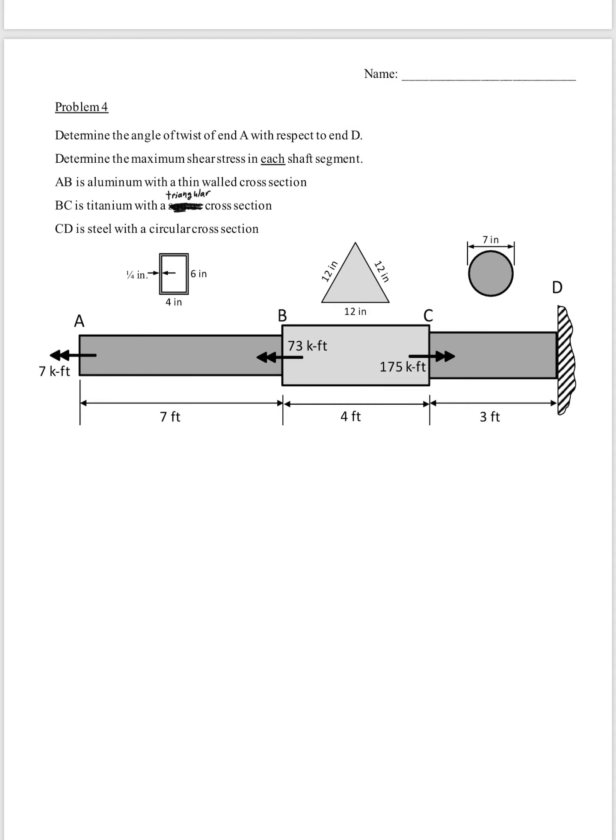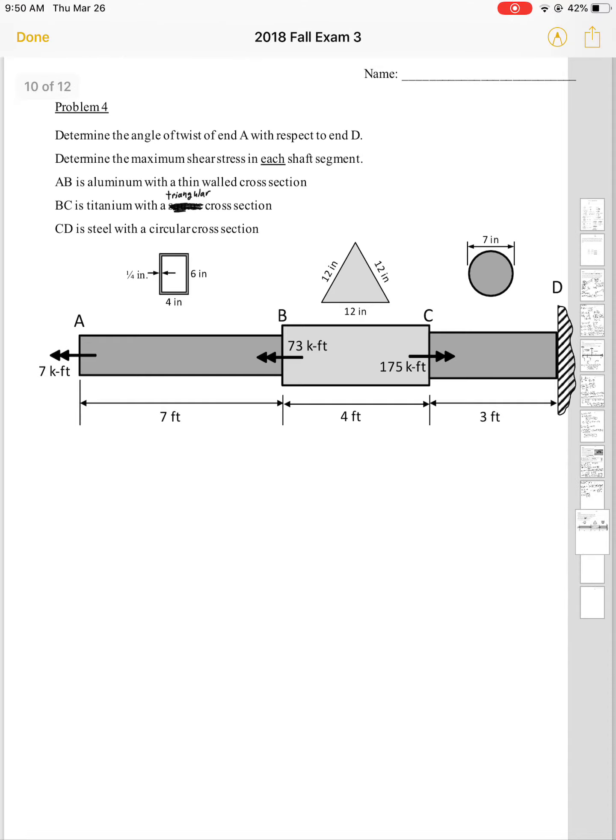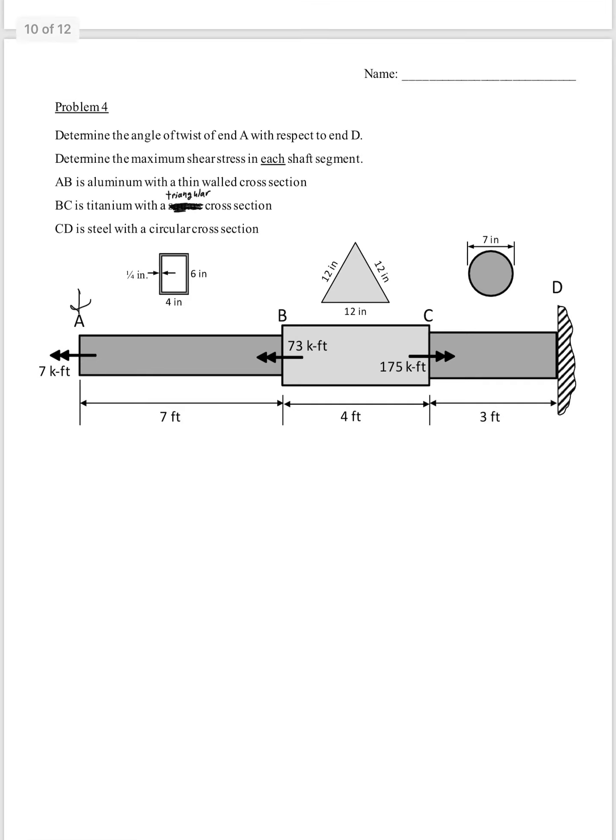Okay, so we're going to find the angle of twist of end A with respect to D, so that's right here with respect to the wall. So really that's just the angle twist of AB plus the angle twist BC plus the angle twist in CD equals the total angle twist from A to D. We have to add all those up separately because they are each separate sections, different geometries, different materials, whatnot.